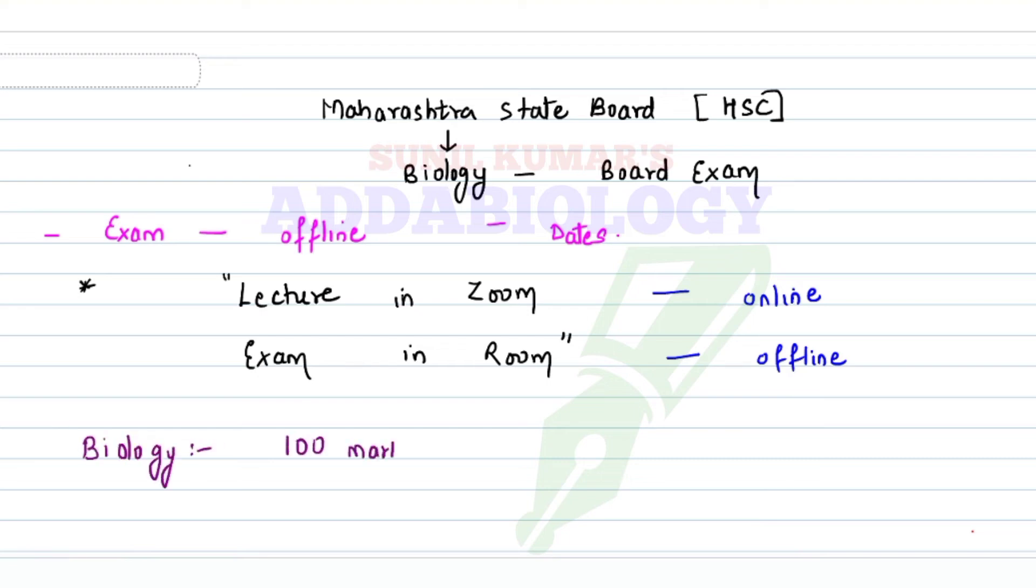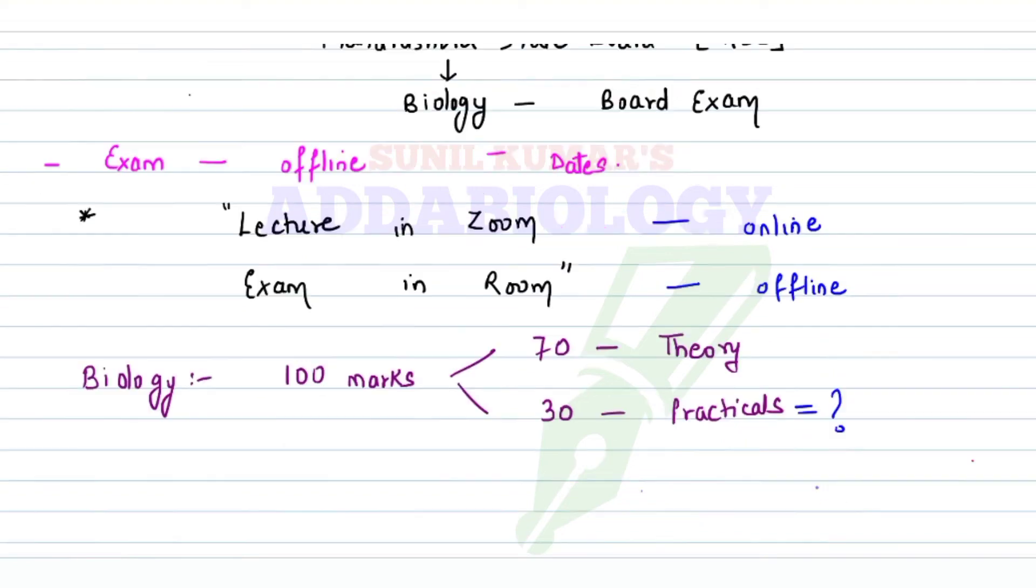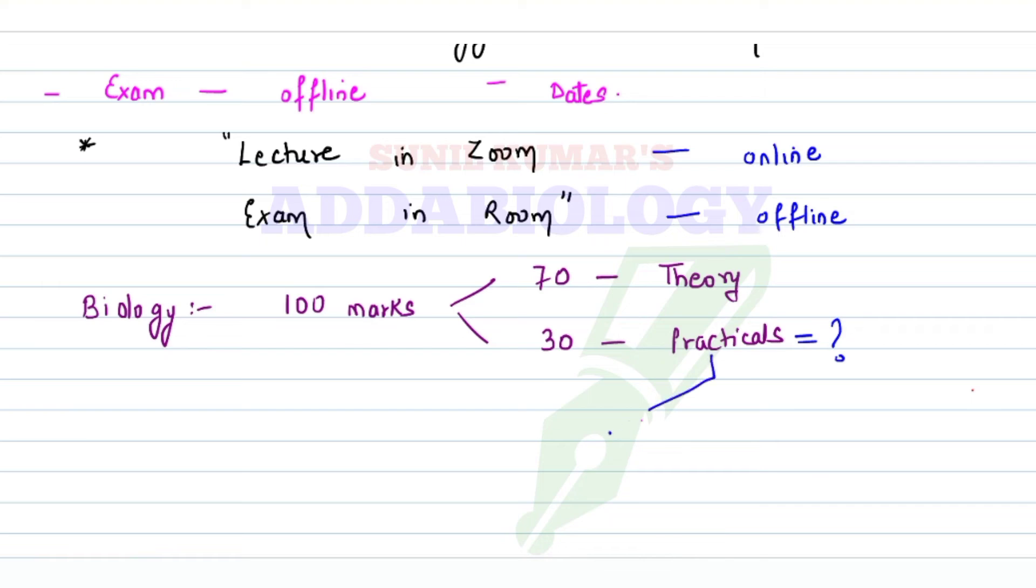Let's understand and make a strategy for how you can manage to score more than 80% marks in the biology exam. Out of 100 marks, 70 marks is theory and 30 marks is for practicals. How many of you have done practical? Most institutes have done practicals online using Zoom, but will it help in the actual exam? Definitely no.